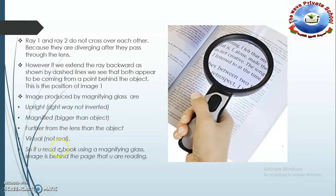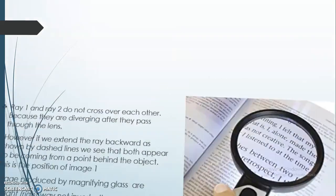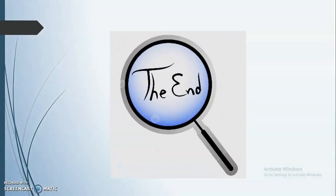The image is virtual, not real. So if you read a book using a magnifying glass, the image is behind the page. Here this is a magnifying glass and it helps to read a topic very clearly if you have poor eyesight. Thank you.